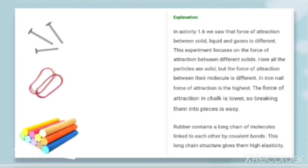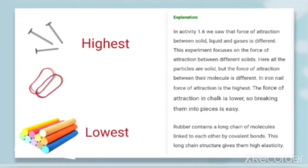All the substances here — iron, rubber band, and chalk — are solid. The force of attraction between their particles is different. In the iron nail the force of attraction is highest, and in the chalk it is lowest, making chalk easiest to break. The rubber band contains a long chain of molecules linked to each other by bonds, and this long chain gives it high elasticity — that is why the rubber band has an elastic nature.